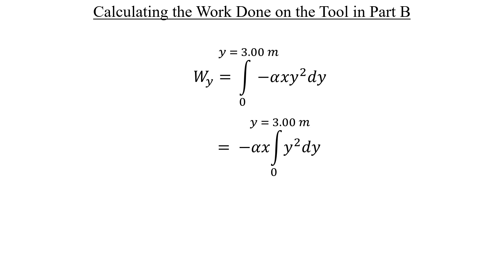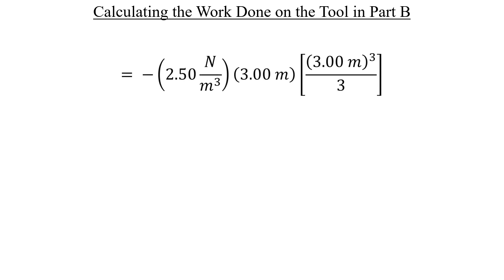Again, we can apply the power rule of integration and get a fairly simple expression, then plug in some numbers. Notice that we have 3 meters cubed multiplied by another 3 meters. So if you like, you can rewrite it as 3 meters to the fourth power. Not necessary, but it looks nice. Our result is non-zero, as expected. But it's also different from what we got in Part A.